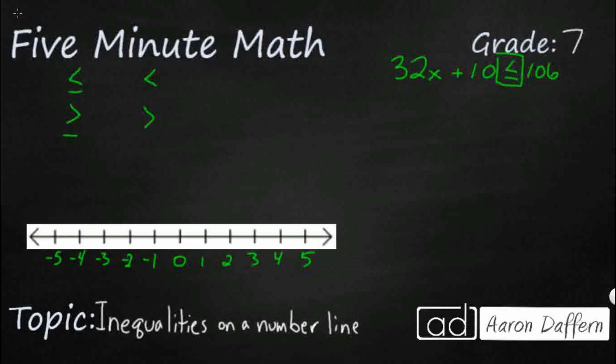So we are going to first see if we can isolate the variable. I've got this 32x sitting right here and I want to get it by itself. So I'm going to take this constant — plus 10 — and think: what is the inverse operation of plus 10? Well, plus 10 inverse is going to be minus, because addition and subtraction are inverse operations. So if I subtract 10 from both sides, I'm going to get that 32x by itself.